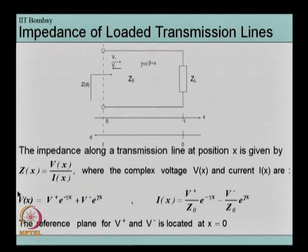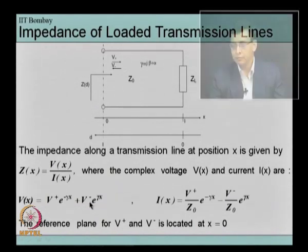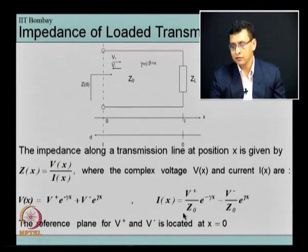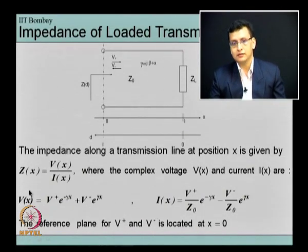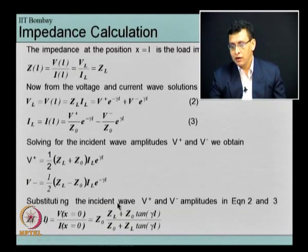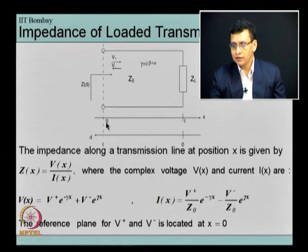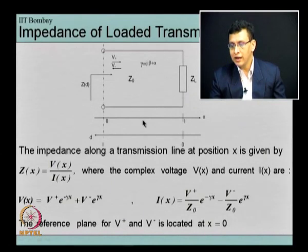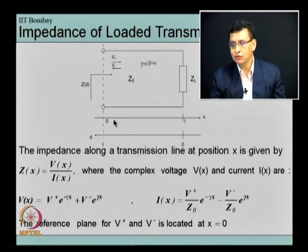While solving the transmission line equations we had come across two equations: one for the voltage and one for the current. The voltage equation was given like this and the current equation was given like this. Here gamma represents the propagation constant and Z0 is what is known as the characteristic impedance. The impedance should be equal to the ratio of V(x) upon I(x) just from definition.